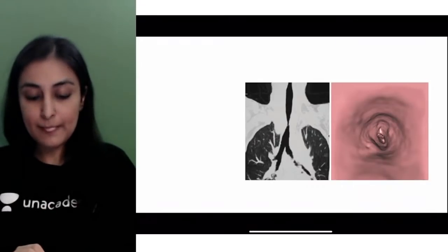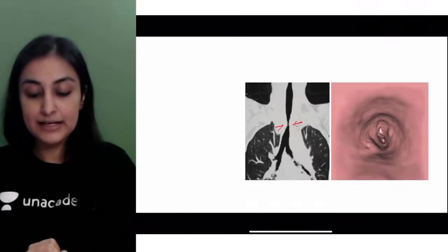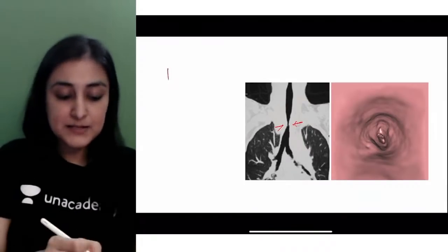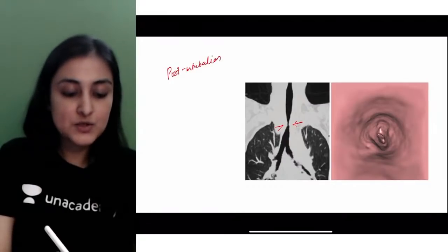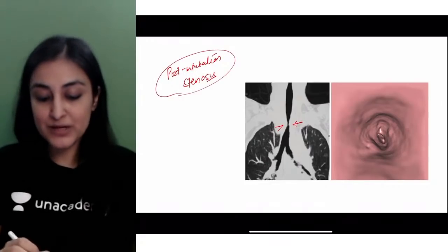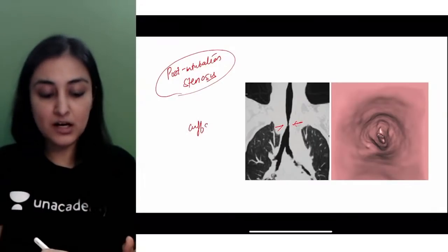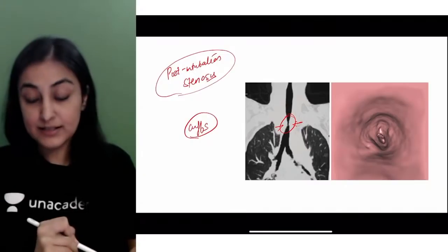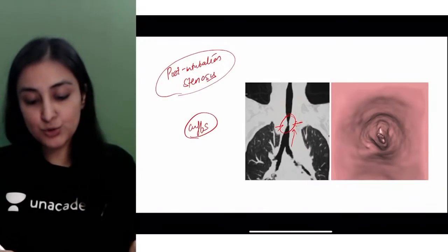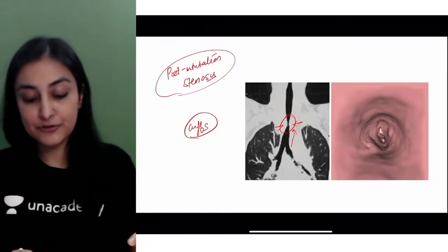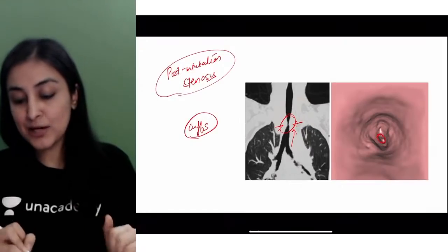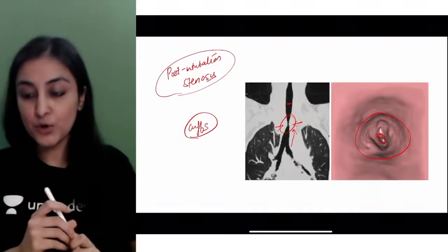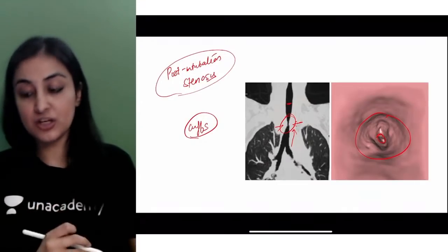Do you see this trachea suddenly getting narrowed? If this person has history of some tube that was inserted, what is this complication? This is post-intubation stenosis - because of chronic intubation, the pressure necrosis caused by the cuffs of the ET tube causes narrowing typically 2-5 cm above the carina where the distal end of the cuff is placed. On virtual bronchoscopy you can see how narrow the lumen gets - normal lumen above, then suddenly very small distally.